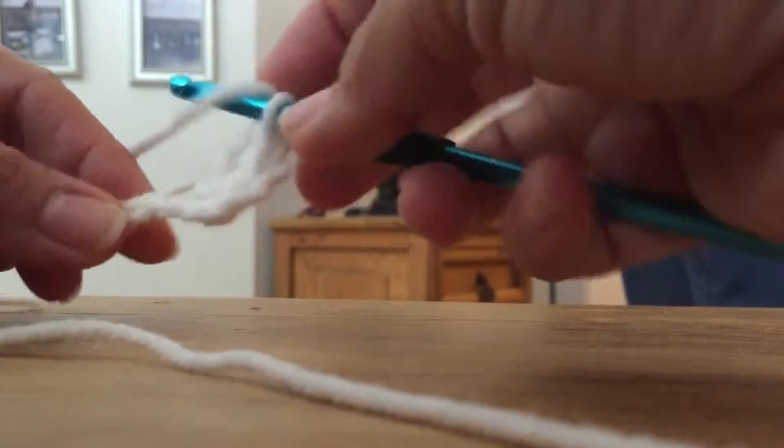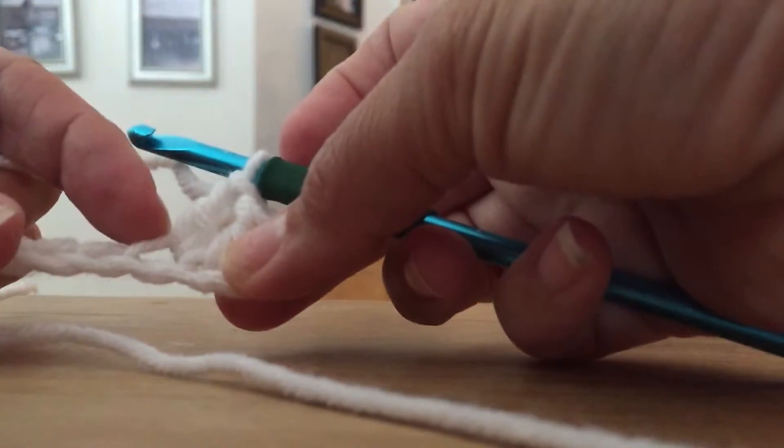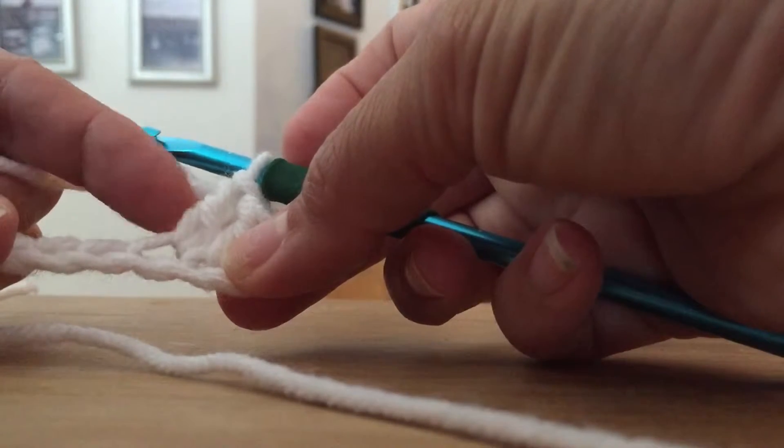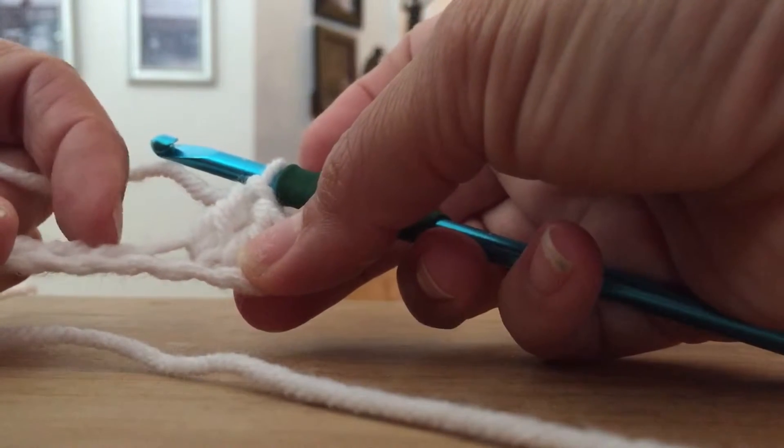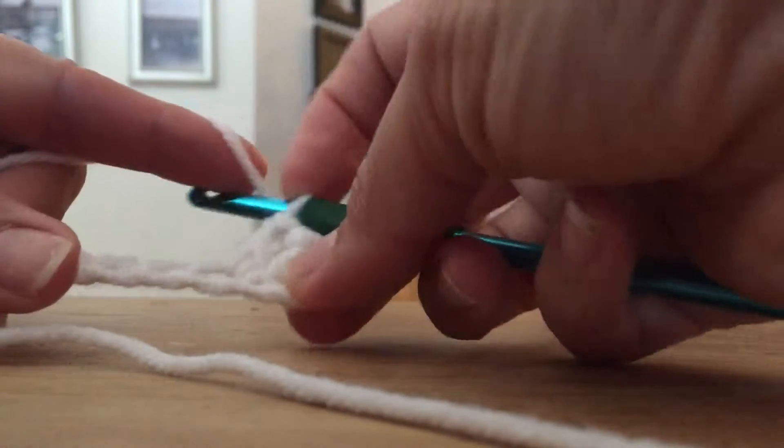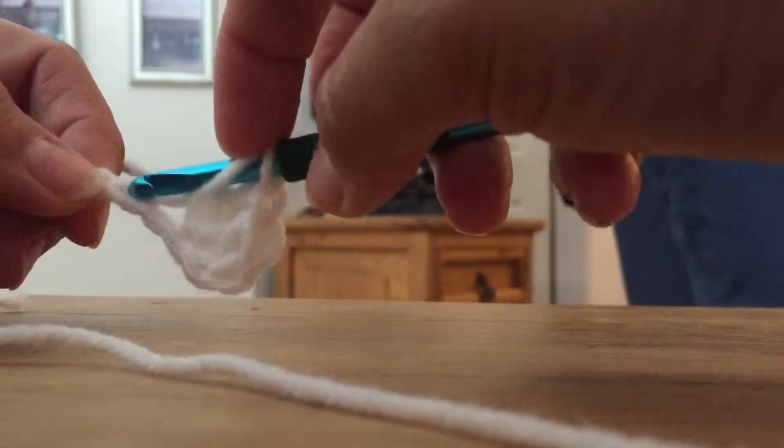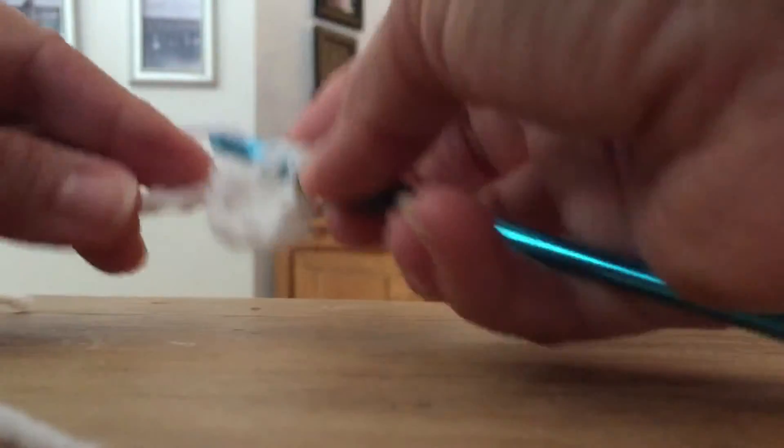Yarn over, go through the next... You can look and see here that the double crochet is attached to this chain so you want to go to the next chain right there. So yarn over, next chain you go in, pull up, yarn over, pull two, yarn over, pull two.